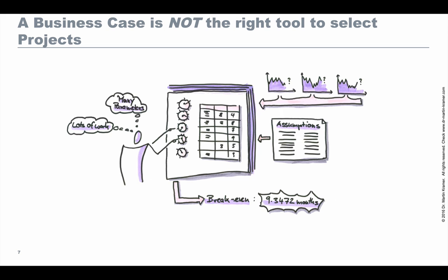A business case usually contains many parameters which require judgment and assumptions from the author, and the results can be largely affected by changing these parameters. Moreover, the results usually create a concrete figure — something like 'break even will be in 9.3 months' — which creates an impression of high precision that is usually not justified. It would be much better to state results as a range or probability, but we often lack the knowledge, skill, or time to create and interpret such results.